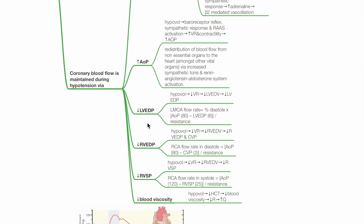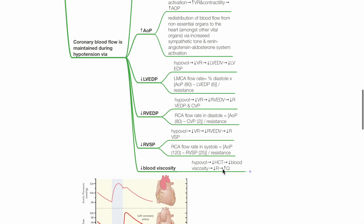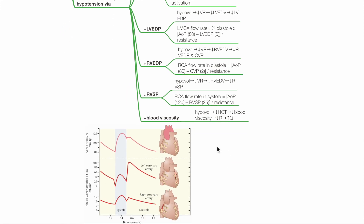Other mechanisms include reduced LV-EDP due to hypovolemia leading to reduced venous return, reduced right ventricular EDP via the same mechanism, and reduced right ventricular systolic pressure due to hypovolemia leading to reduced venous return and reduced right ventricular end-diastolic volume and pressure. If hypotension is due to blood loss, reduced hematocrit leads to reduced blood viscosity, reduced resistance, and increased blood flow.